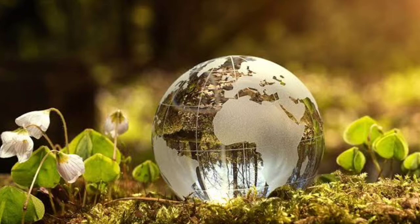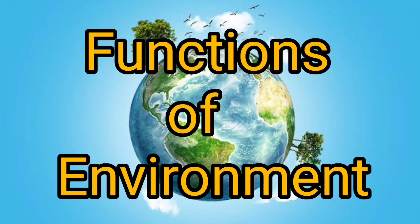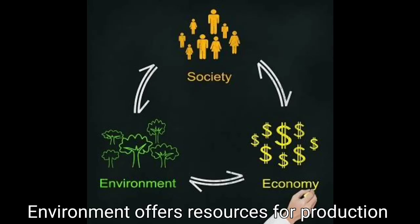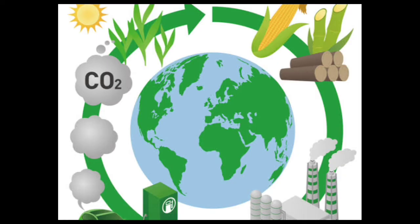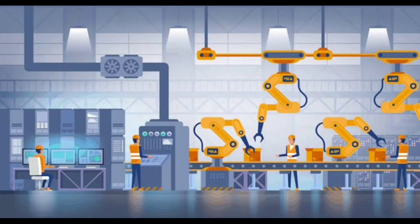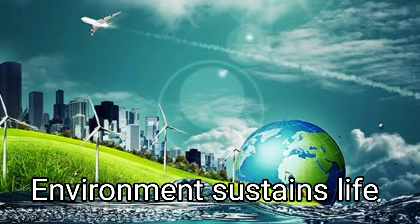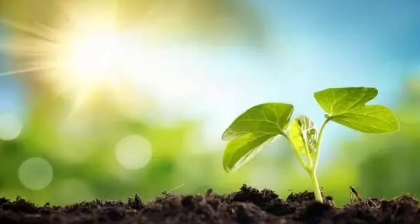If we talk about the functions of environment, the first one is that environment offers resources for production. Environment includes physical resources like minerals, wood, water, soil and others which we get as a free gift from nature. These resources are used as input for production. The next function is that environment sustains life — environment includes sun, soil, water and air which are essential for human life.